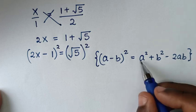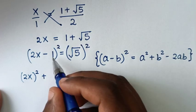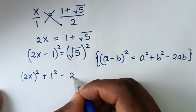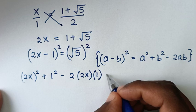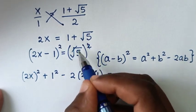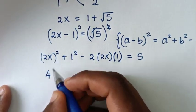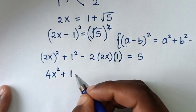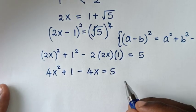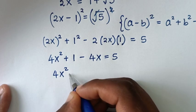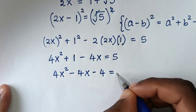We'll apply this form: a squared gives (2x) squared, plus b squared gives 1 squared, minus 2 times 2x times 1. So it becomes 4x squared plus 1 minus 4x equals 5. Then taking 5 to the left side gives 4x squared minus 4x plus 1 minus 5 equals 0, which is 4x squared minus 4x minus 4 equals 0.